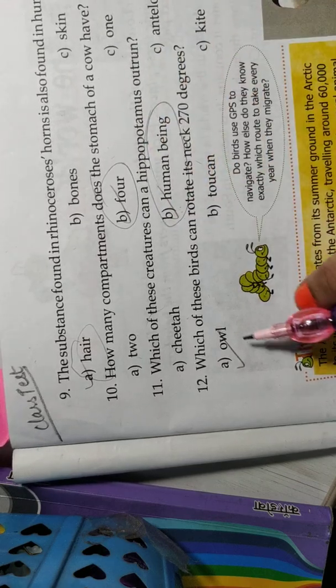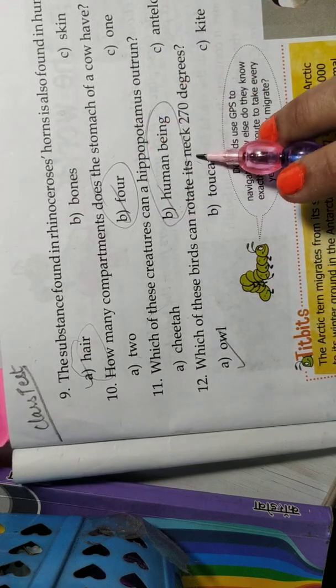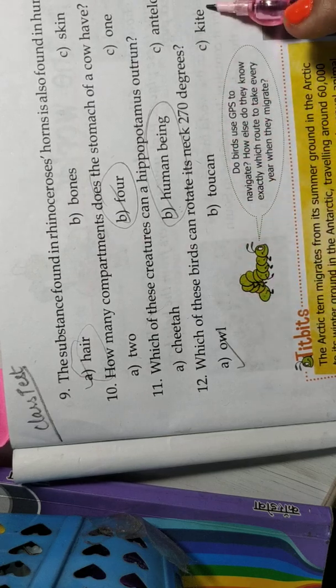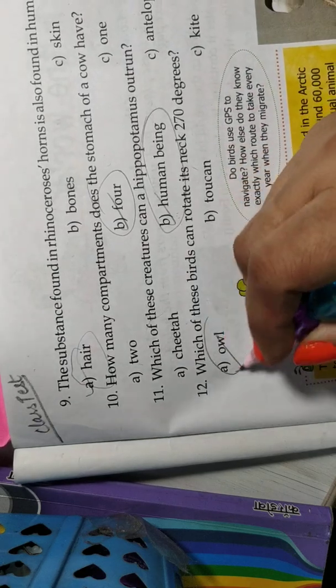Which of these birds can rotate its neck 270 degrees? Owl, toucan, kite. Owl is the correct answer.